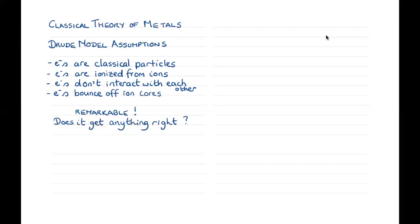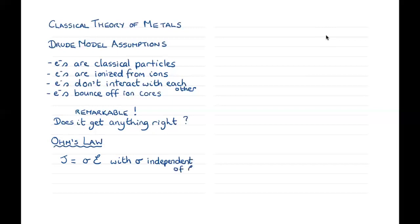The first property we're going to discuss and apply the Drude model to is Ohm's law — electrical conductivity. I'm going to write Ohm's law slightly differently from V equals IR. Instead: the current density is equal to the conductivity times the electric field. That's Ohm's law when the conductivity is independent of the electric field — i.e., the current density is linear in the electric field. We want to know: is this predicted by the Drude model?